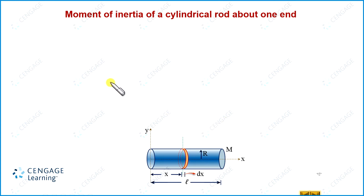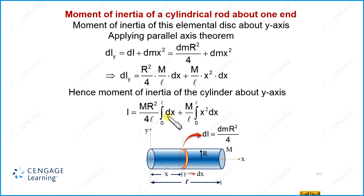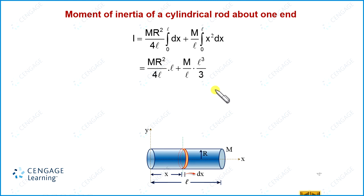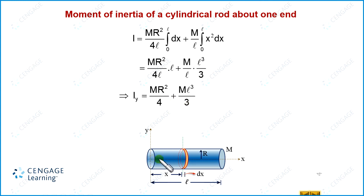Integrating: ∫dx = x, so after placing the limits this gives l. The integral of x² equals x³/3, and after placing the limits this becomes l³/3. After cancellation, l and l cancel in the first term giving mr²/4, and l and l cancel in the second term leaving ml²/3. So the moment of inertia of the cylinder about one of its ends, the y-axis, equals mr²/4 + ml²/3.